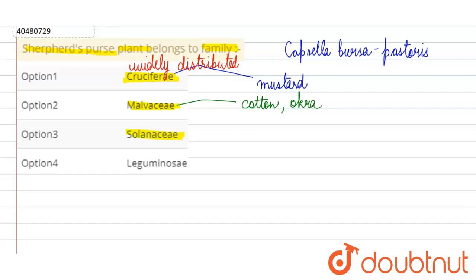Then, Solanaceae. It is a very well-known family of flowering plants. There are many economically important plants. There are edible plants such as potato, tomato, brinjal, capsicum, chili. Because potato is the most well-known member, we call the Solanaceae family the potato family.